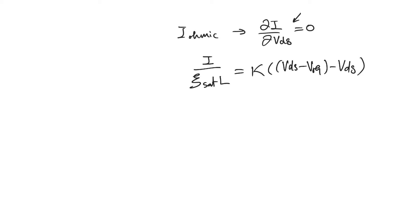It's important to check that this makes sense. For a long channel transistor, L is large, so ESAT·L is a large value and the left-hand side reduces to zero. This gives us the pinch-off point when VDS equals VGS minus V_threshold, which is the pinch-off saturation voltage we are used to.